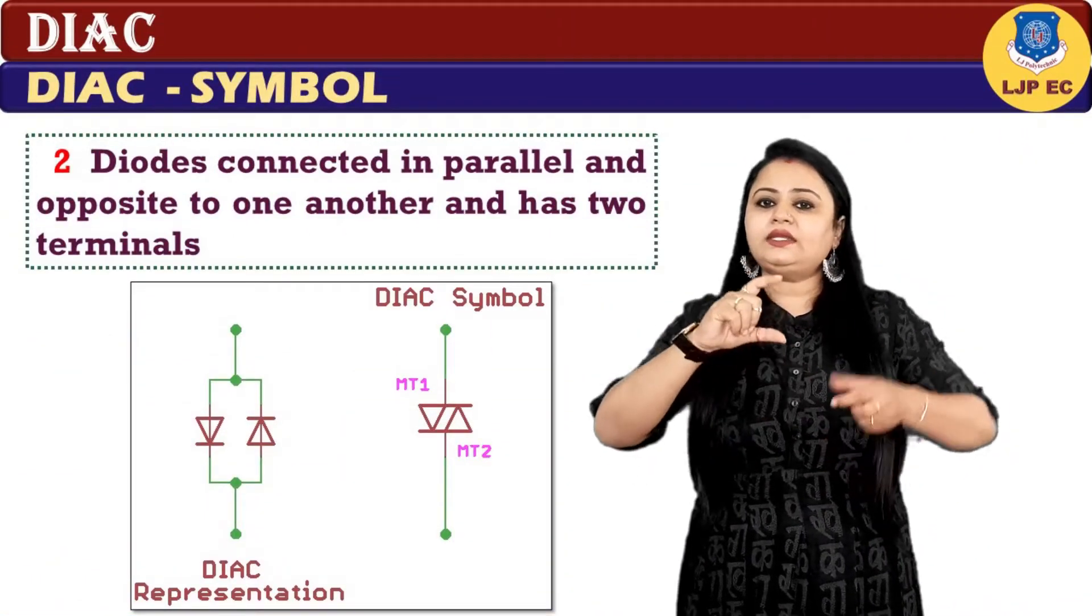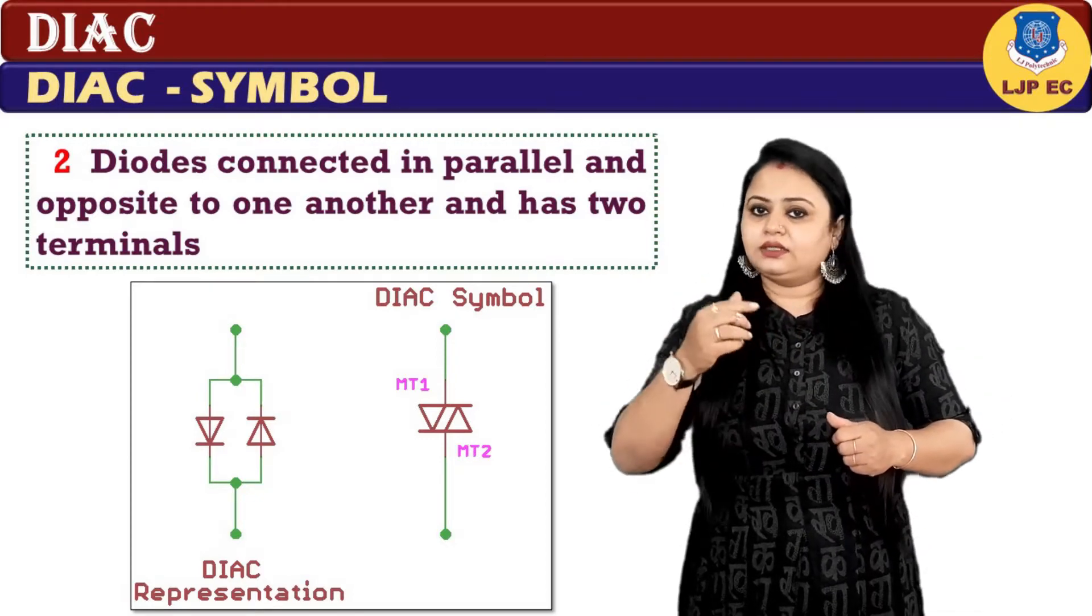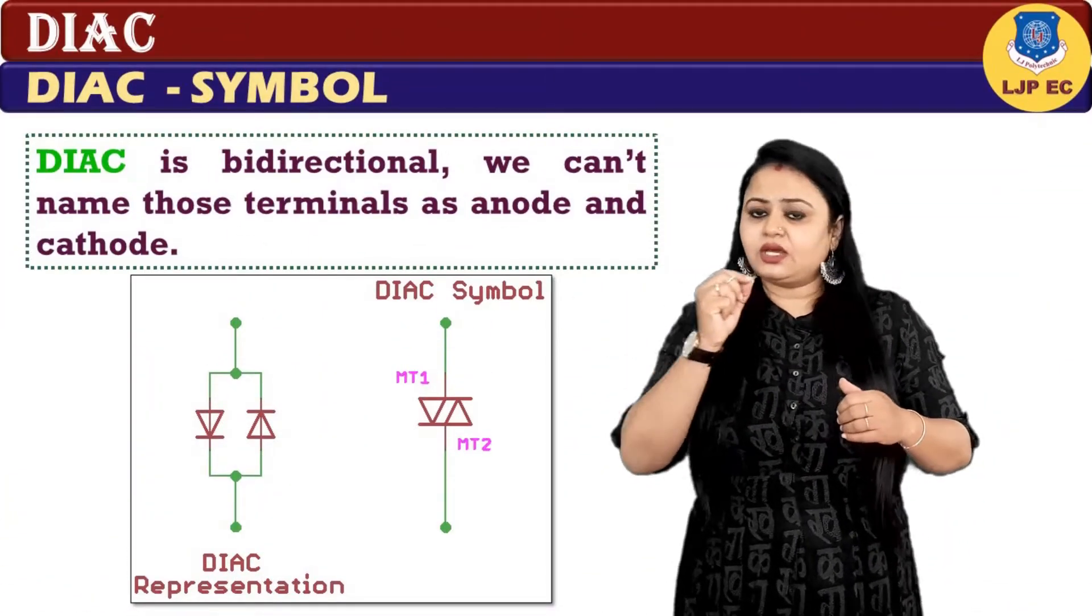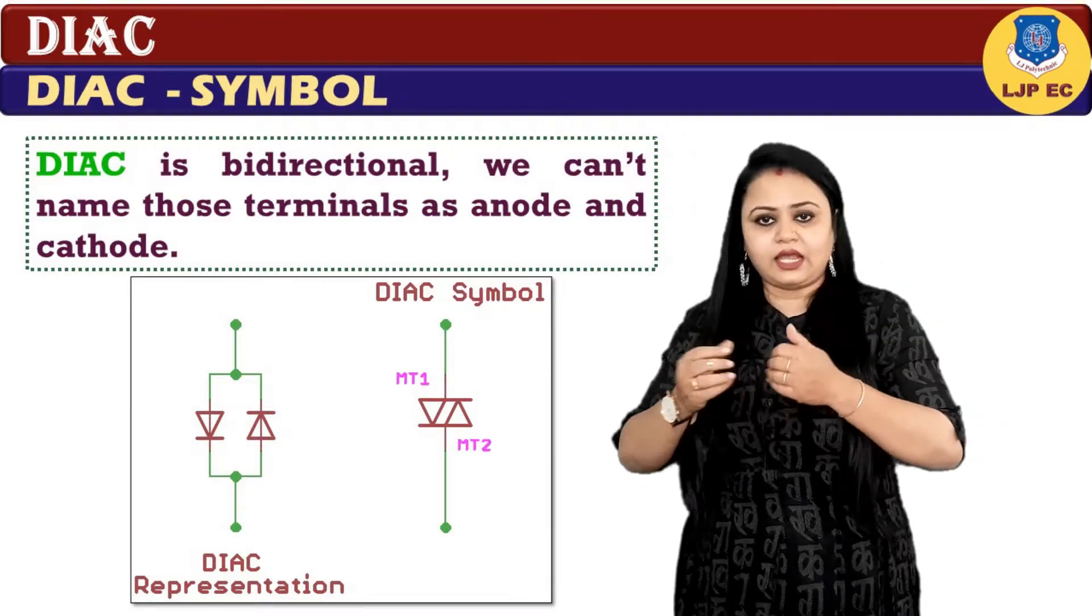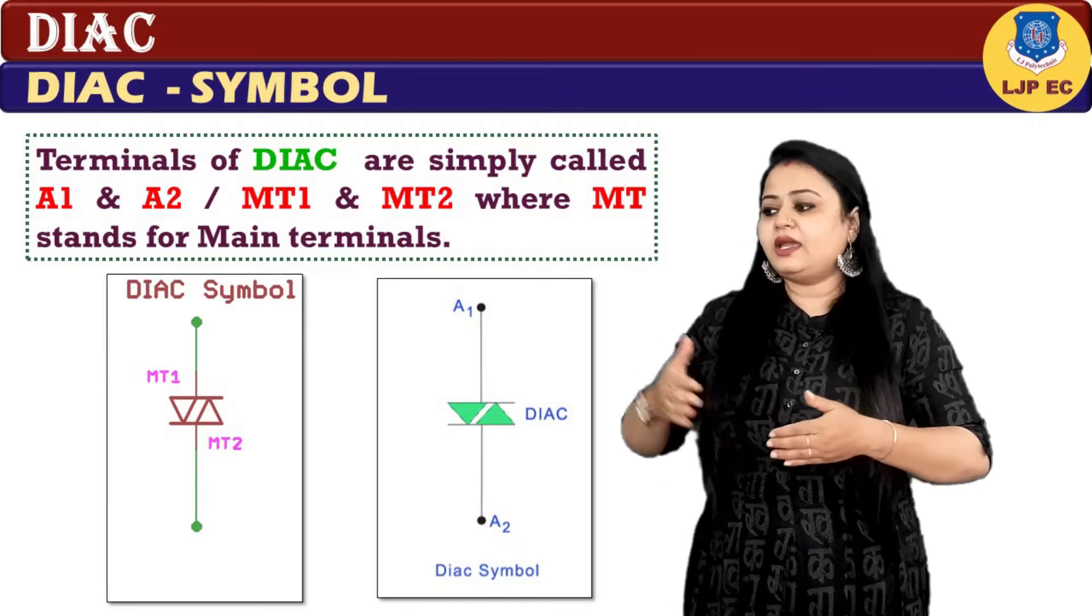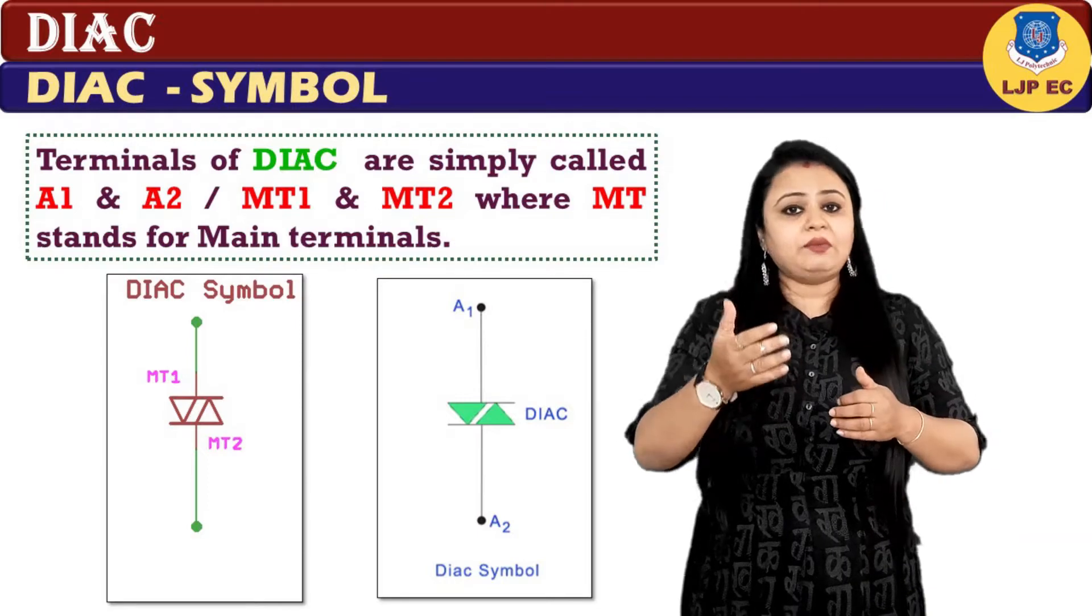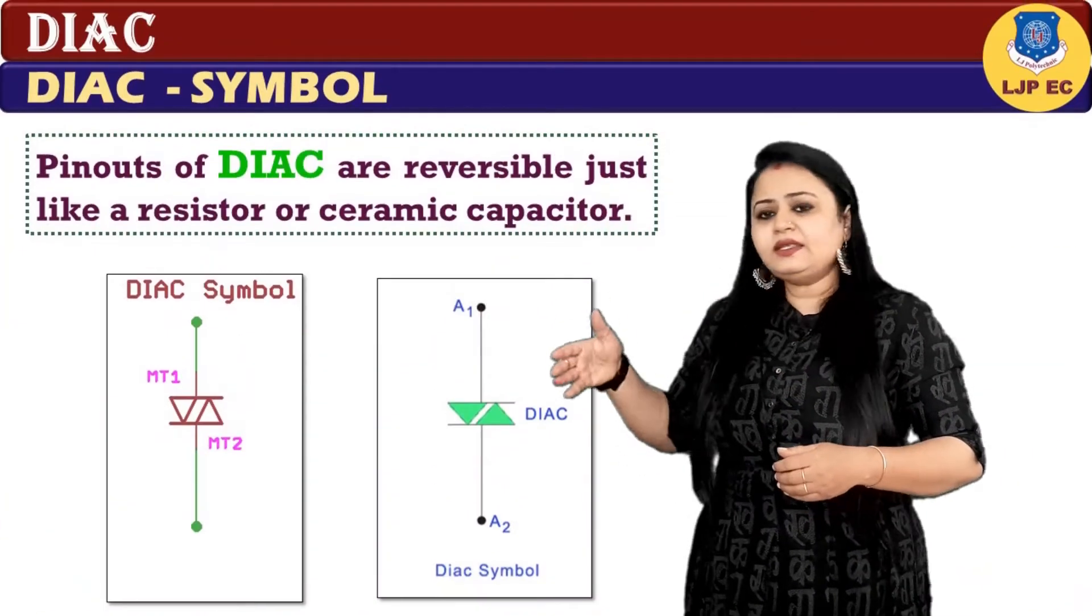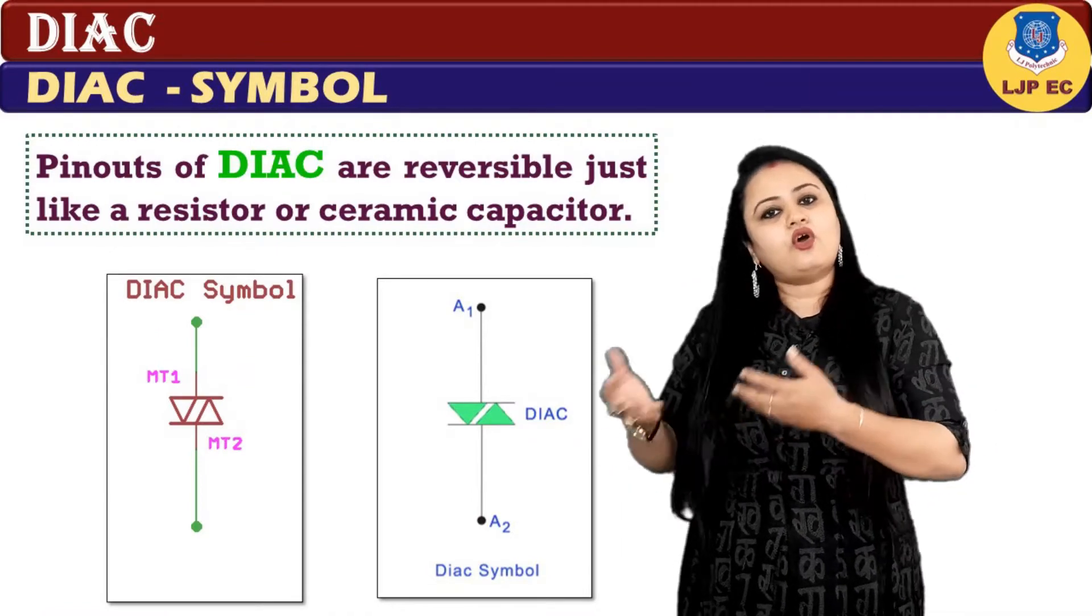Now let us see the symbol of DIAC. DIAC is given by the symbol of two diodes connected in parallel and opposite to one another and has two terminals. Since DIAC is bi-directional, we can't name those terminals as anode and cathode. The terminals of DIAC are simply called A1 and A2, or MT1 and MT2, where MT stands for main terminals.